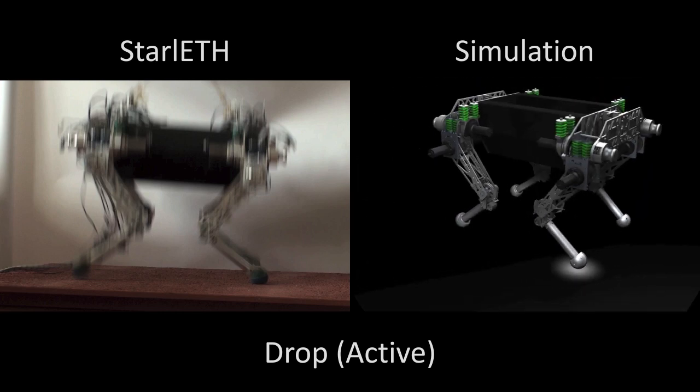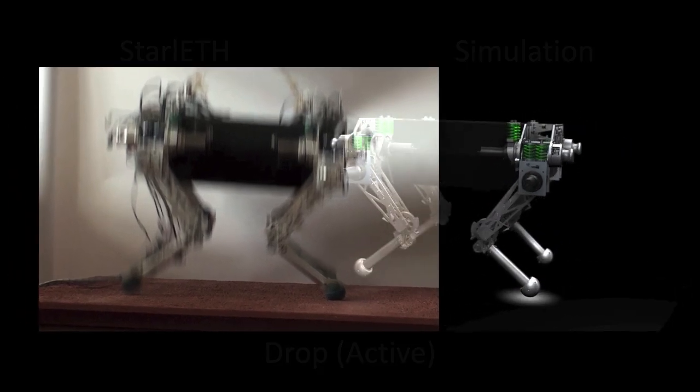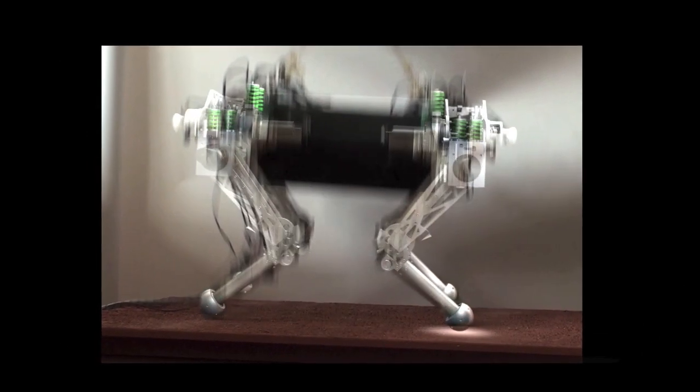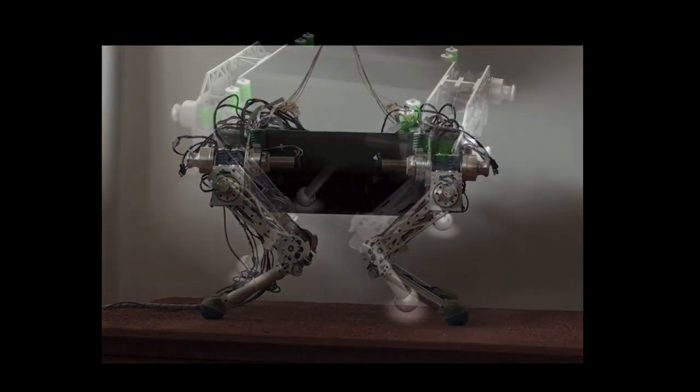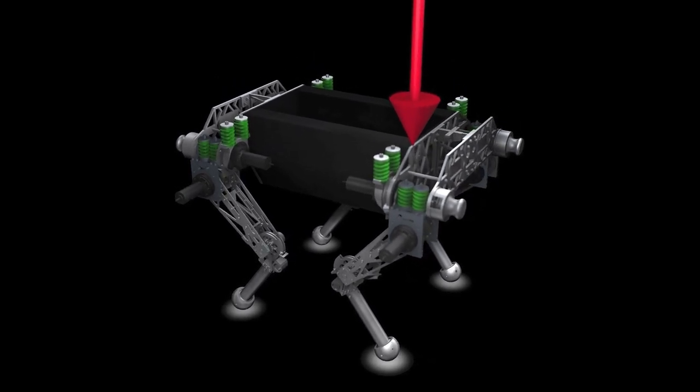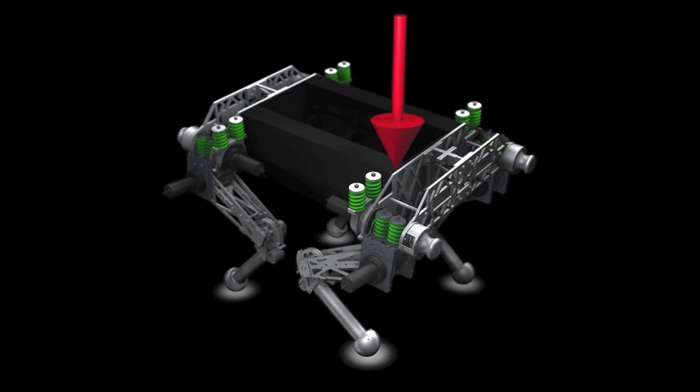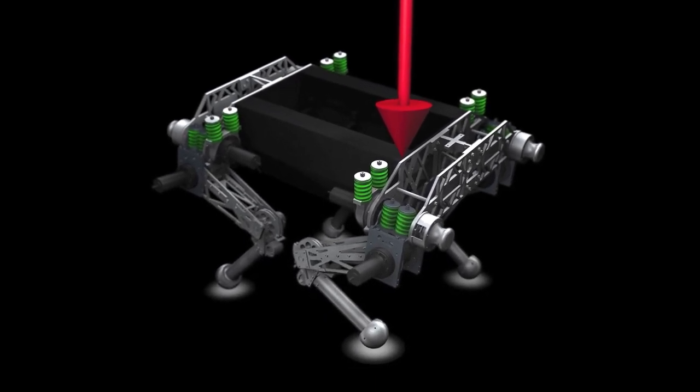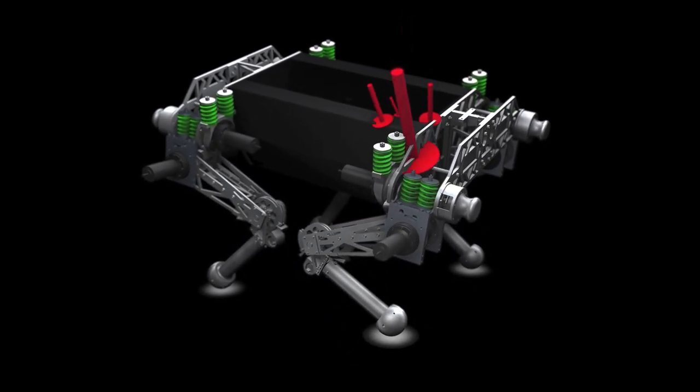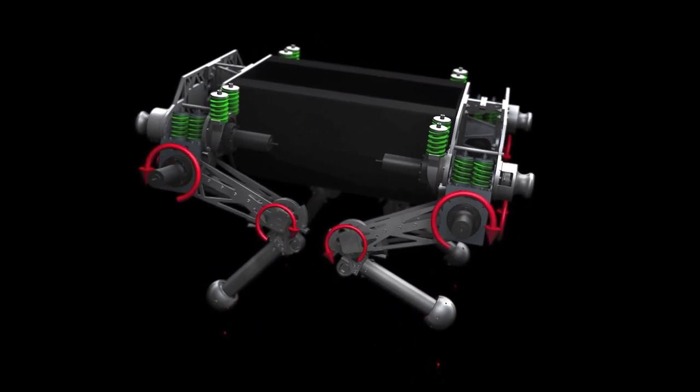After making contact with the ground, the joint angles, body acceleration and rotation rates can be measured. With this information, the base position can be precisely estimated. To control the robot, we virtually apply forces on the main body. This allows us to imitate the required dynamics needed to stabilize the robot's orientation and position.